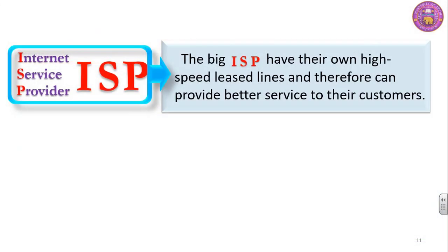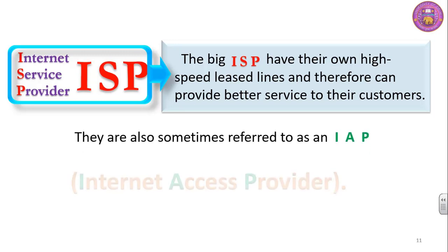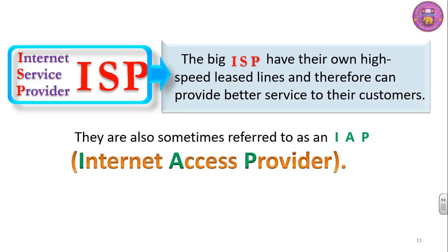The big ISP have their own high-speed leased lines and therefore they can provide better service to their customers. They are also sometimes referred to as an IAP, internet access provider.